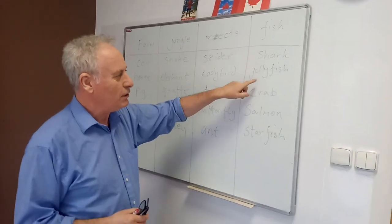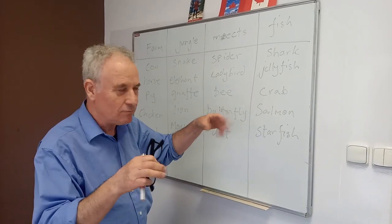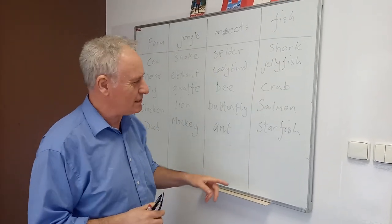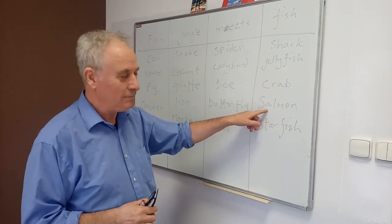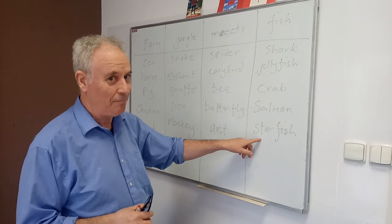And fish. Shark. Jellyfish. Jellyfish is a good one. Crab. It's not really a fish but it does live in the sea. Salmon. Starfish. That's not really a fish either. But it lives in the sea.